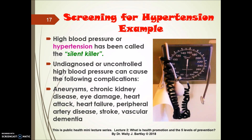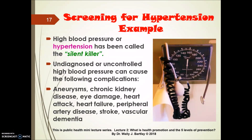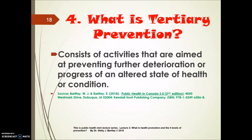Screening for hypertension is an example of secondary prevention. High blood pressure, or hypertension, has been dubbed the silent killer because clients don't actually realize they are hypertensive because there are no overt signs and symptoms — the only way to detect it is through blood pressure screening. If left undiagnosed or uncontrolled, hypertension can cause aneurysms, chronic kidney disease, eye damage, heart attacks, heart failure, peripheral artery disease, stroke, and vascular dementia, to name but a few complications.